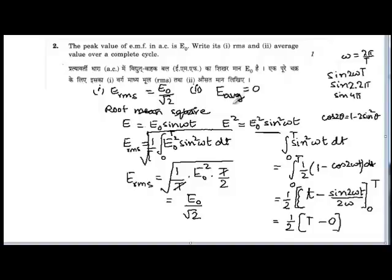And when you are finding out the average value, just the average value, then that would be 1/T integral E₀ sin ωt dt from 0 to T. And you can similarly prove that this integration is going to be 0. So this is equal to 0, the average value.